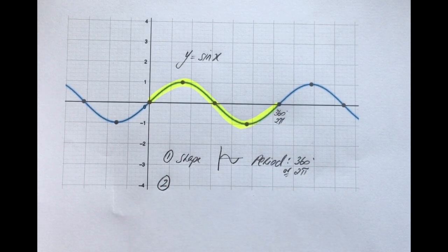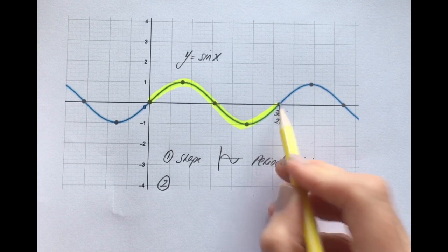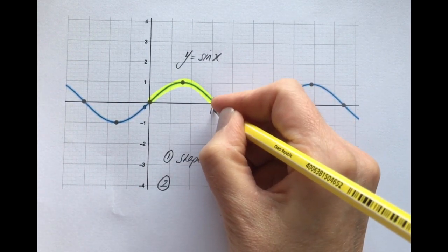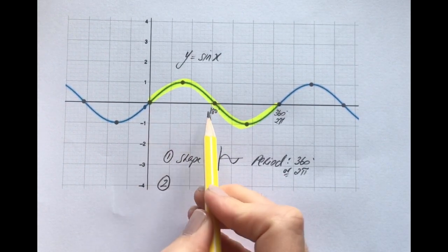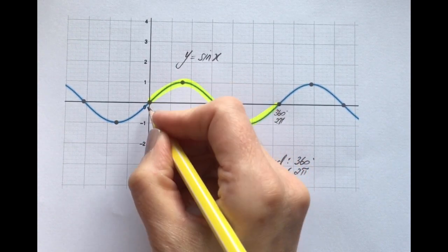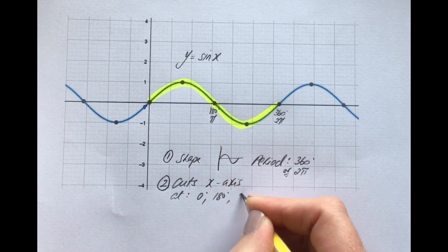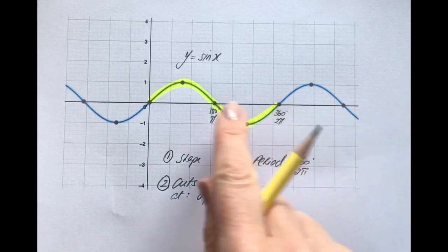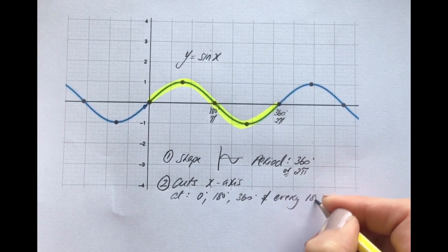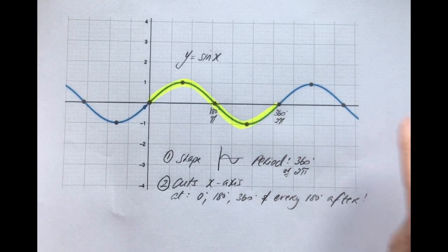The second really important thing to know about the sine curve is where it cuts the x-axis. If you put in sine of 360 degrees on the calculator, you get 0. Sine of 180 degrees — which is the same as pi in radians — also gives 0. And sine of 0 is also 0. So it cuts the x-axis at 0, 180, and 360, and every 180 degrees after that.